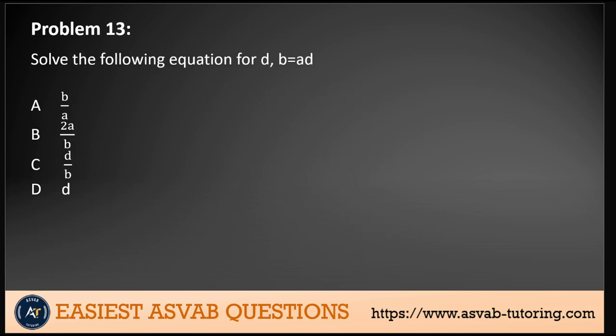Problem 13: Solve the following equation for D: B equals AD. So we have B equals AD, and solving for D means we need to divide both sides by A. So D equals B divided by A. There you go, B divided by A.